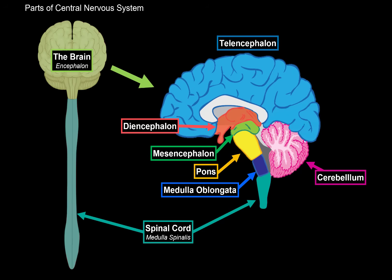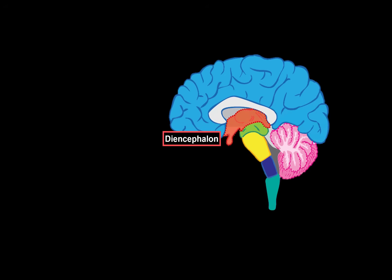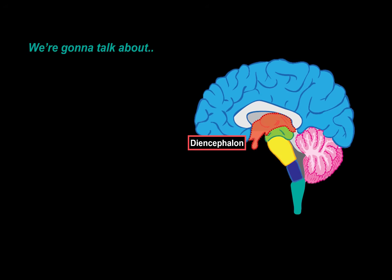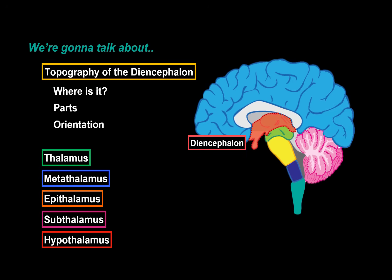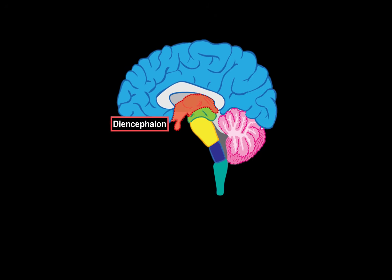Our focus in this video is going to be the diencephalon. We're first going to look at the topography of the diencephalon — basically understand where it is, what parts are considered the diencephalon, and what's the orientation between these parts. After that, we will cover the actual anatomy of all the structures that make up the diencephalon.